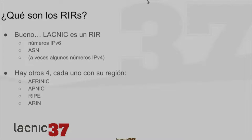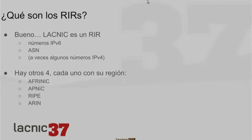In the Internet, there are five RIRs. In addition to LACNIC, we have AFRINIC for Africa, APNIC for Asia-Pacific, RIPE for Europe, and ARIN for North America — the United States, Canada, and maybe some regions in the Caribbean.